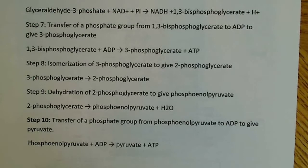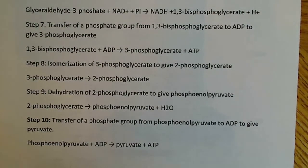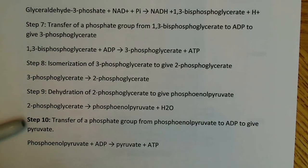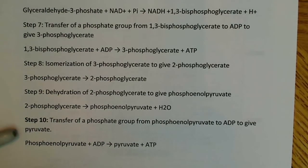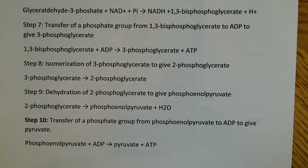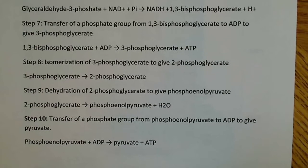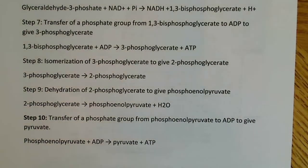Step ten is highlighted because that's the final step where regulation occurs. Fructose-1,6-bisphosphate is an allosteric activator of pyruvate kinase, which is the enzyme used here. Pyruvate kinase catalyzes the transfer of a phosphate group from phosphoenolpyruvate to ADP, giving us pyruvate plus ATP.